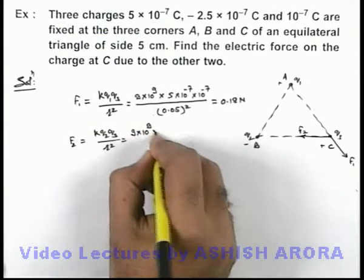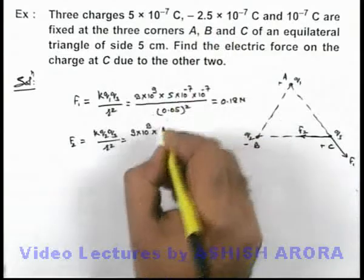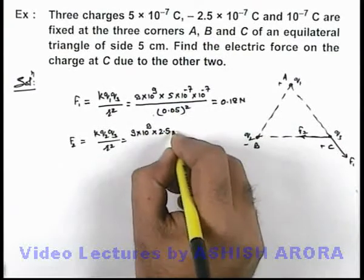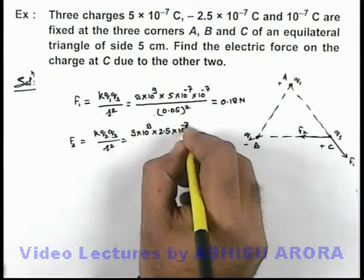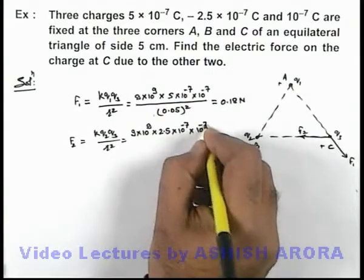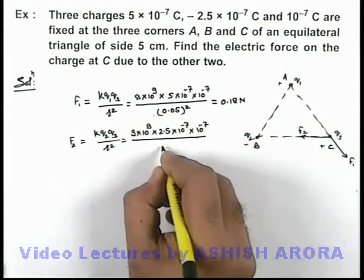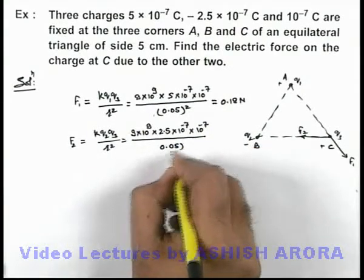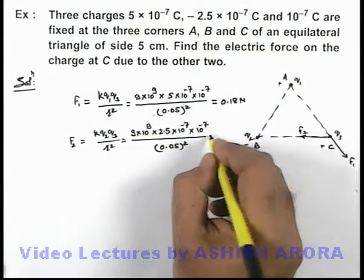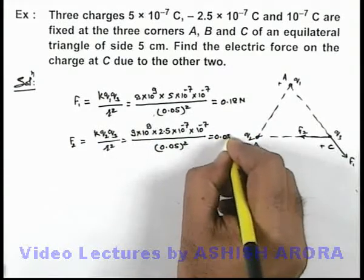And its magnitude we can again calculate by substituting values: k is 9 × 10⁹, multiplied by q₂ magnitude, which is 2.5 × 10⁻⁷ times 10⁻⁷, divided by 0.05 squared. On simplifying, we'll get the result 0.09 newton.